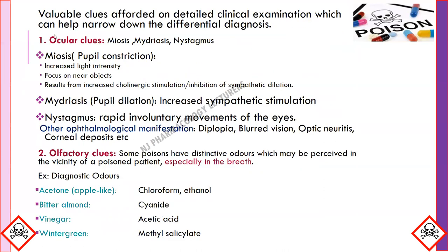Valuable clues from detailed clinical examination can help narrow the differential diagnosis. Ocular clues: several drugs or poisons may affect the pupil of the eye, producing either miosis (pupil constriction — increased light intensity, focus on near objects, from increased cholinergic stimulation or inhibition of sympathetic dilation), mydriasis (pupil dilation from increased sympathetic stimulation), or nystagmus (rapid involuntary movement of the eye). Other ophthalmological manifestations include diplopia (double vision), blurred vision, optic neuritis, and corneal deposits.